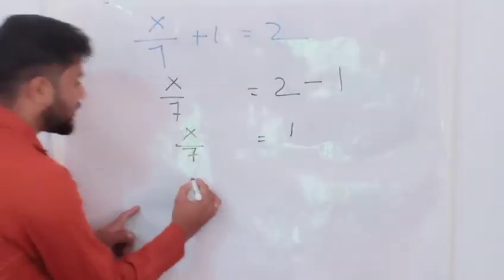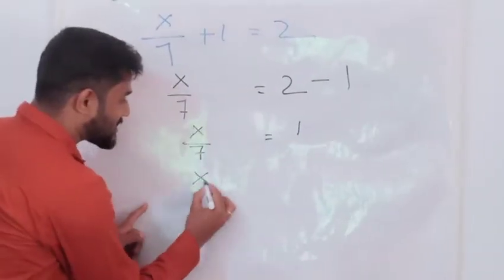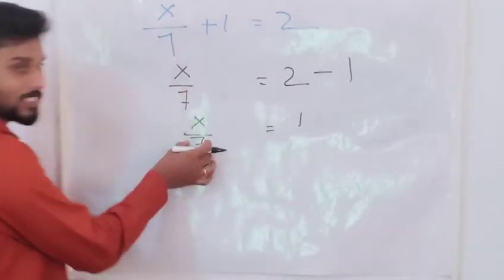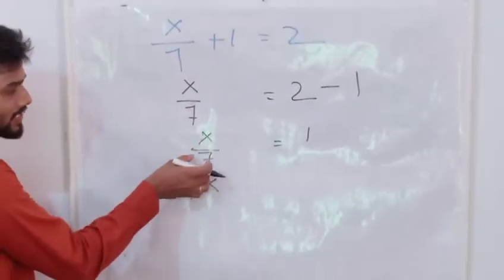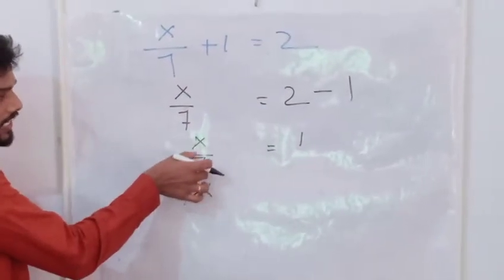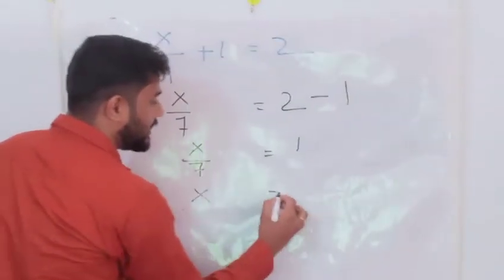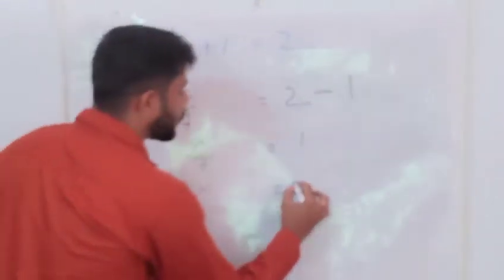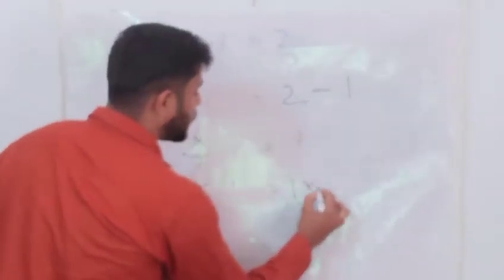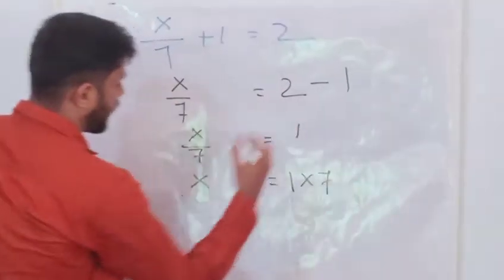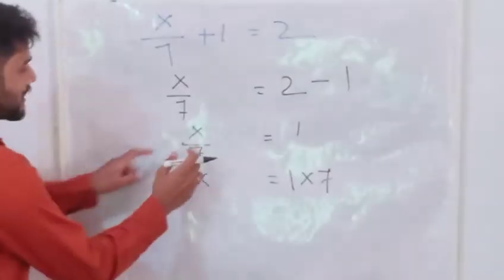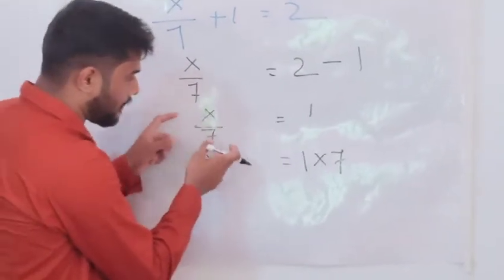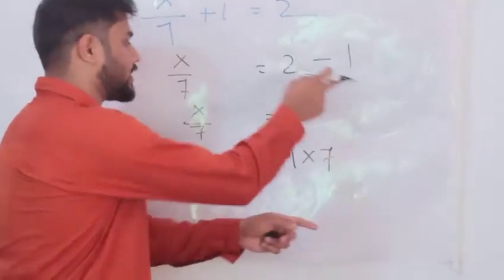Now, this X by 7 — this 'by 7', from left hand side, is going to the right hand side. Then it becomes 'into'. Into 7. 7 means 1 by 7. 1 by 7 is from left hand side going to right hand side. It becomes 7 by 1, which means 7.